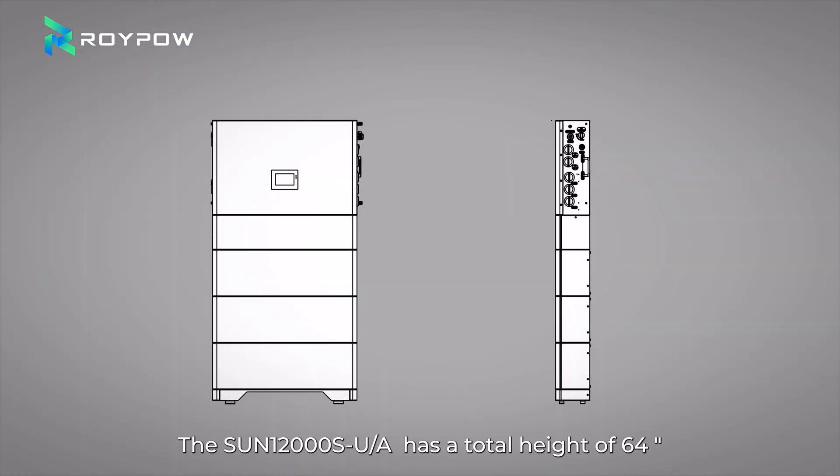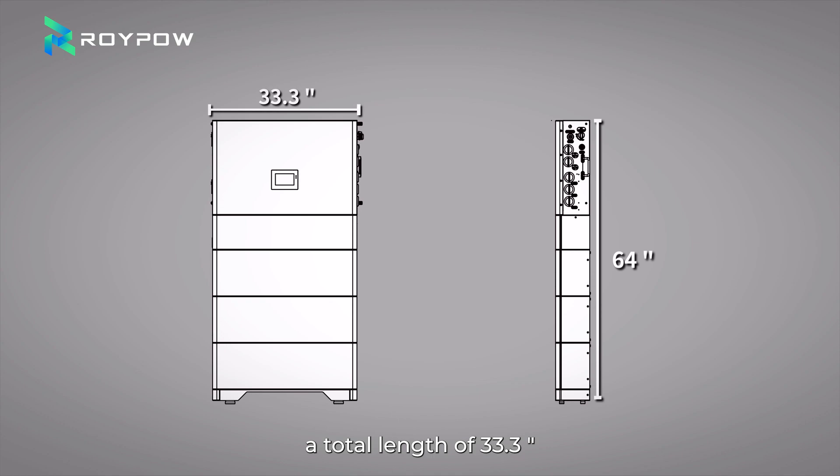The 12kW 15kWh System has a total height of 64 inch, a total length of 33.3 inch and a total depth of 7.9 inch. Its total weight is 458.6 pounds.